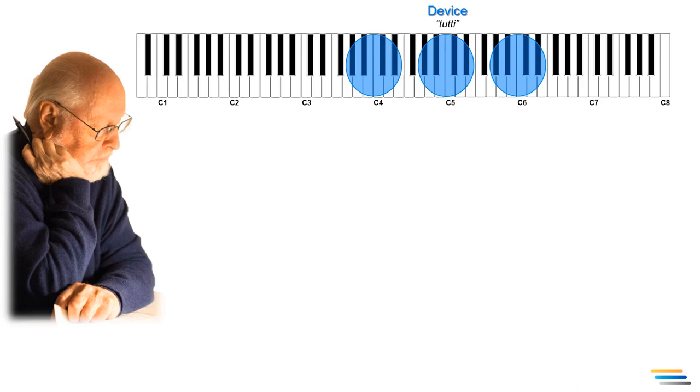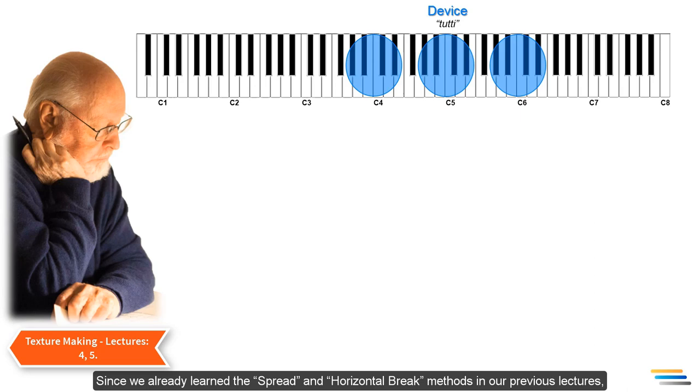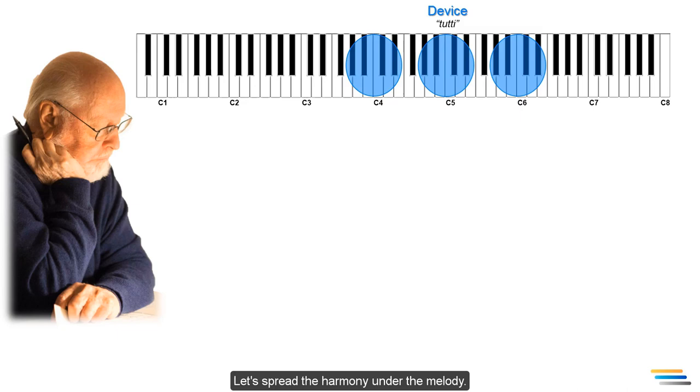Let's start from the bottom register. Since we already learned the spread and horizontal break methods in our previous lectures, the magic of John Williams' skills will be easily understandable. Let's spread the harmony under the melody.